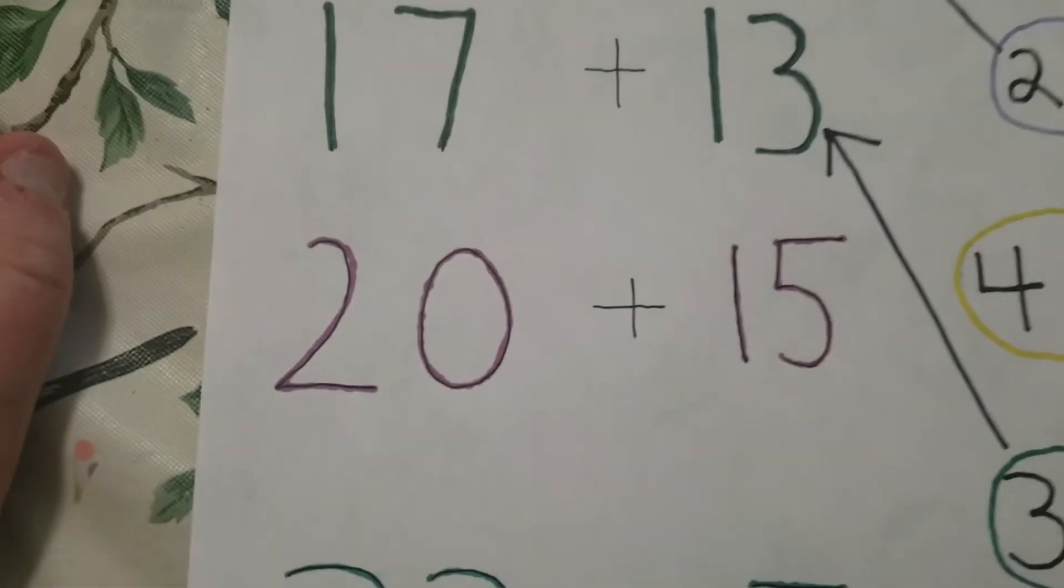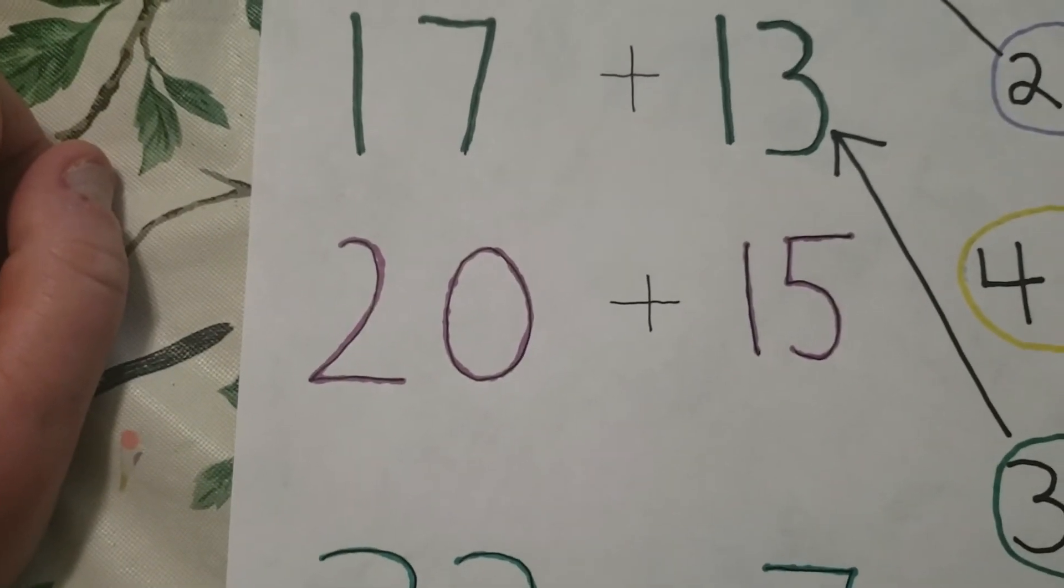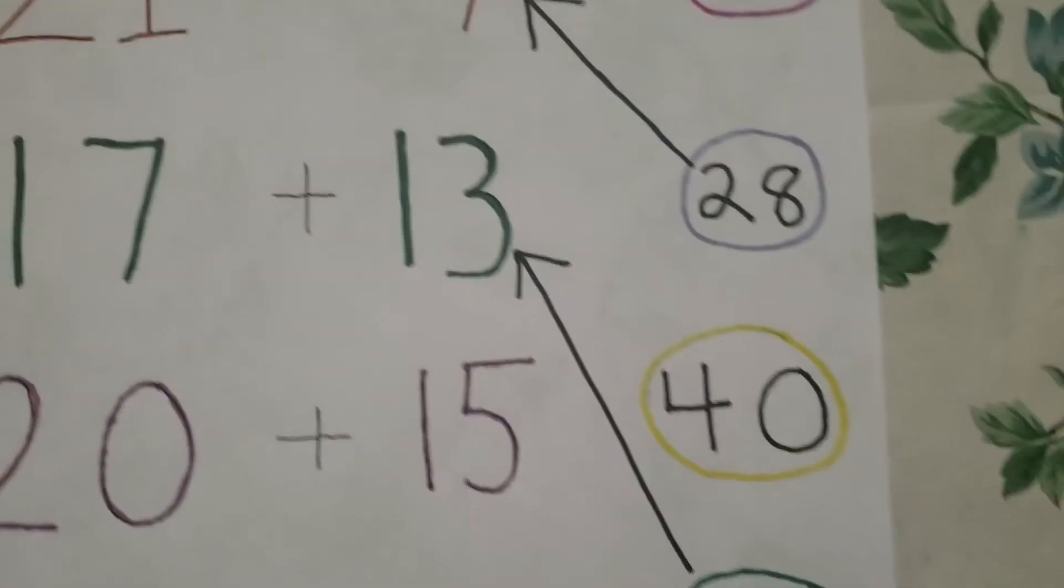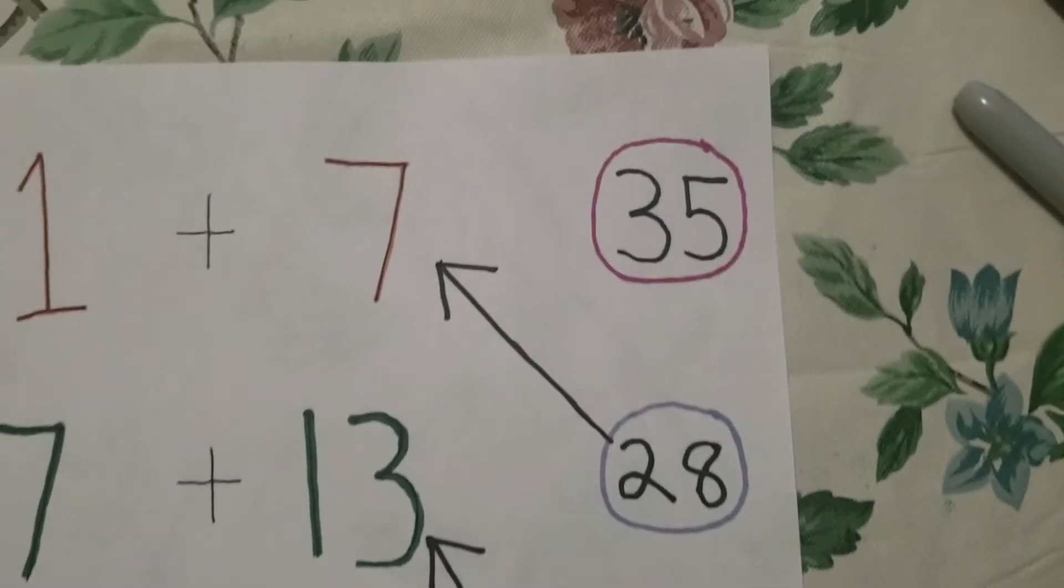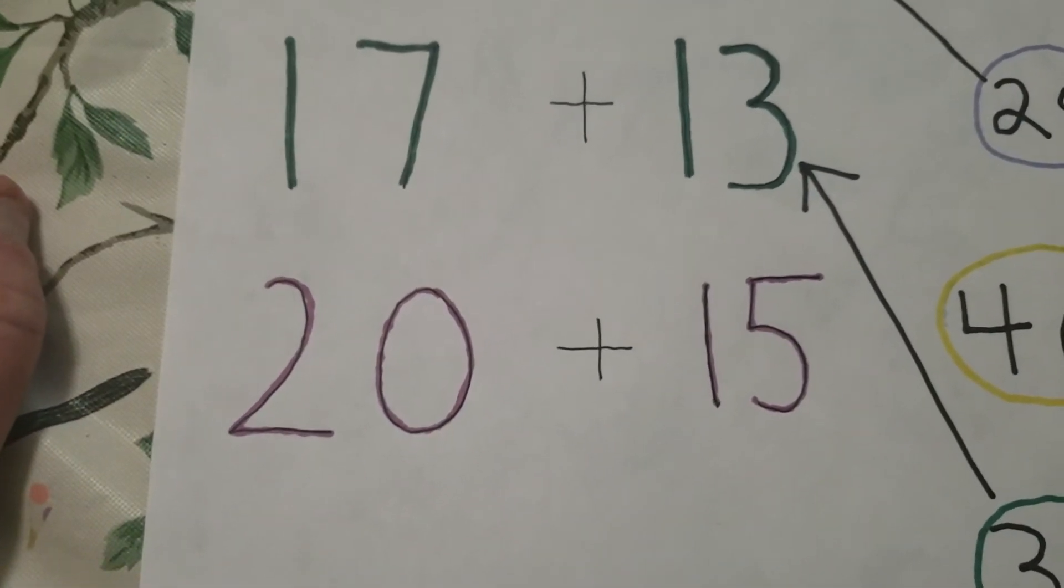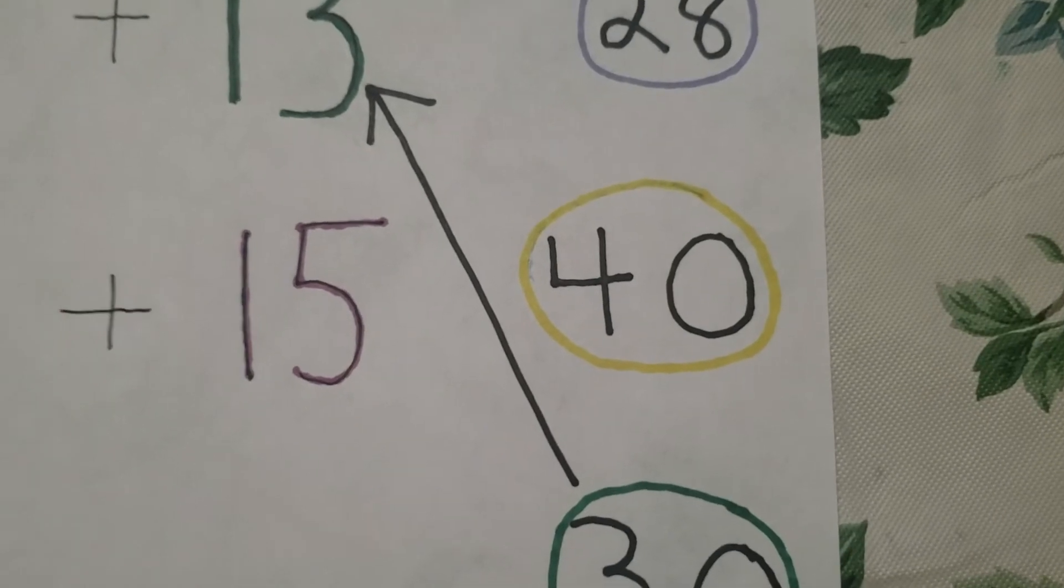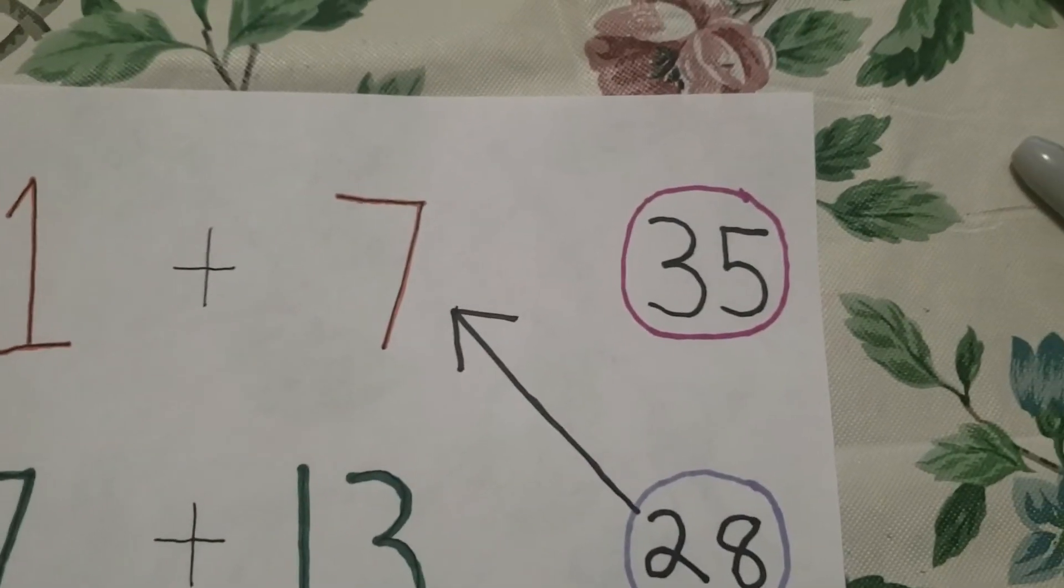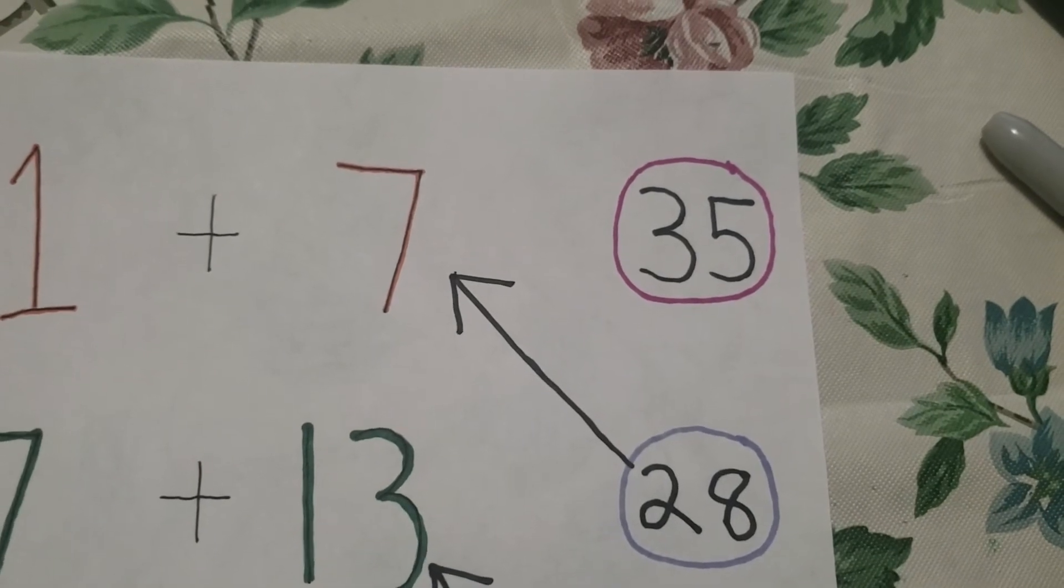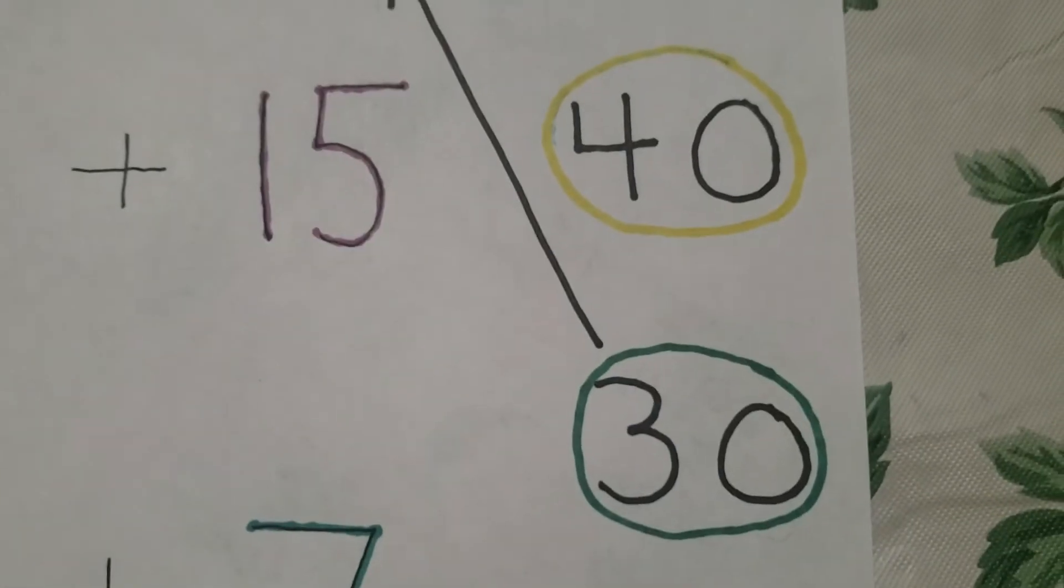Now we're getting into bigger numbers. We have here 20 plus 15. Now we only have two numbers left. So what could be 20 plus 15? Is it 40? I don't think so. Or is it 35? What do you think? 35 or 40? I think it's 40.